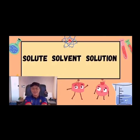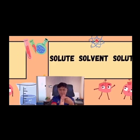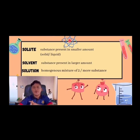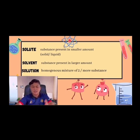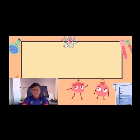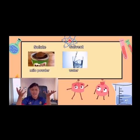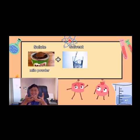But first, you guys need to differentiate three important things, which is solute, solvent, and solution. Solute is a substance that is present in a small amount, and also it's present in a solid form or liquid form. Solvent is a substance that is present in a large amount. Last, we have a solution, which is a homogeneous mixture of two or more substances. Just assume that we have a solute as a mellow and a solvent which is water, and when we combine them, we have a solution.